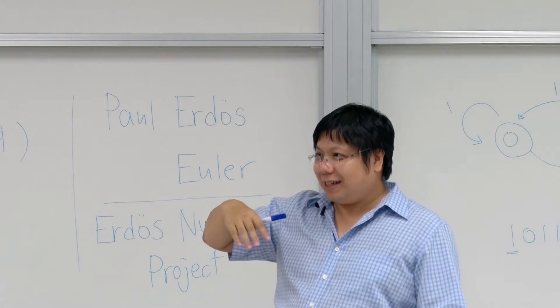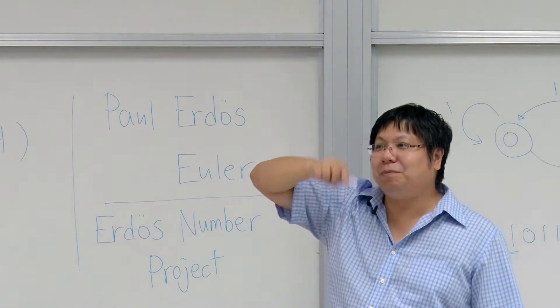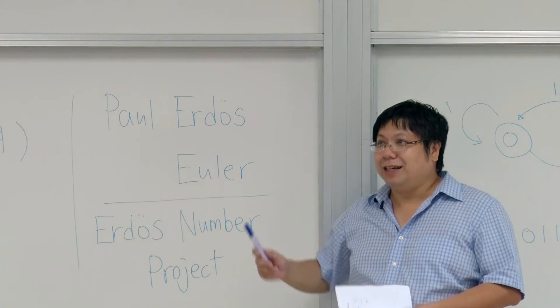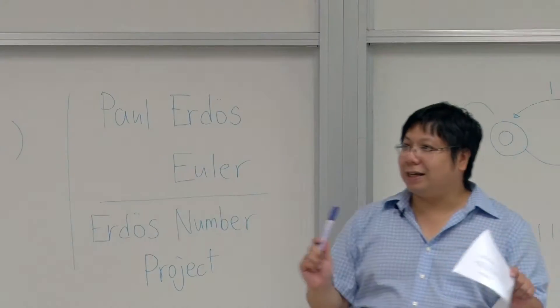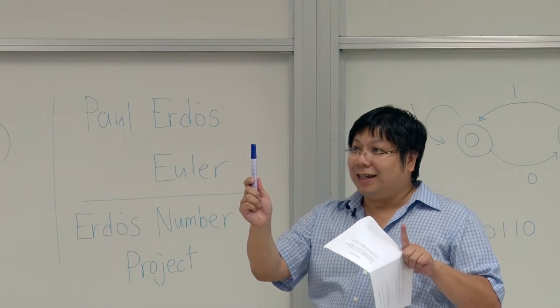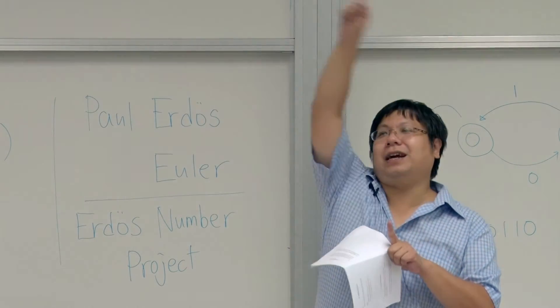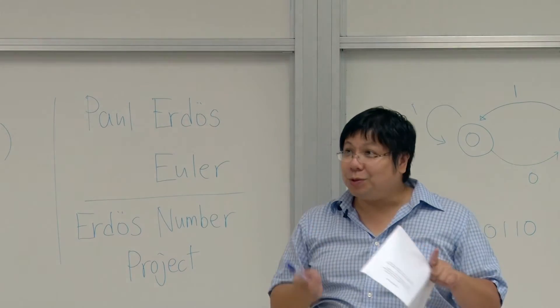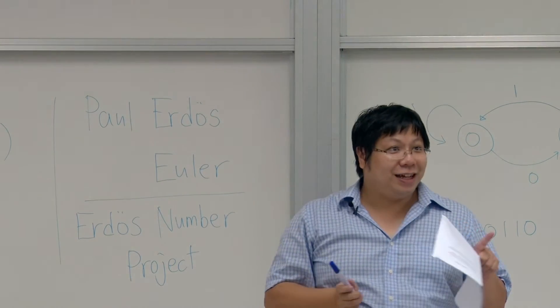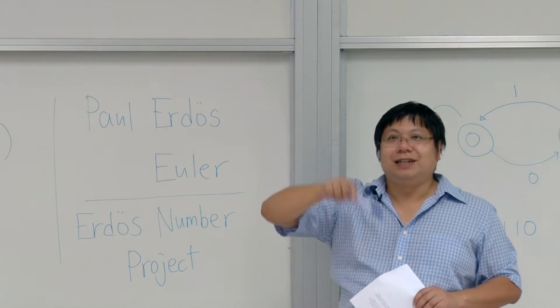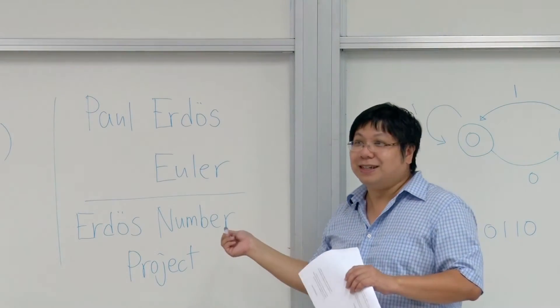Erdős number counts the minimum number of steps that you are away from this Erdős. If you are directly writing a paper together with Erdős, you have Erdős number one. And if you are writing a paper together with someone with Erdős number one, then you have Erdős number two. So Erdős number project tries to trace, if you type in your name, it tries to trace what is your Erdős number.